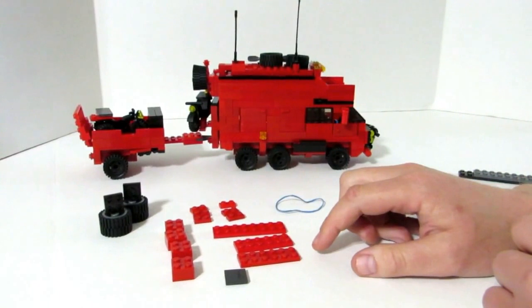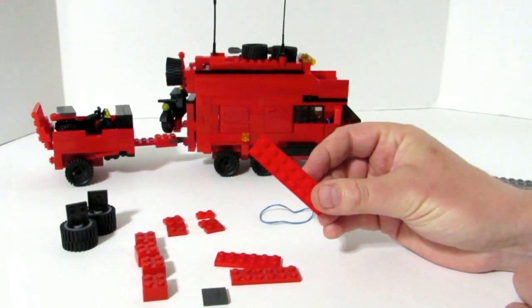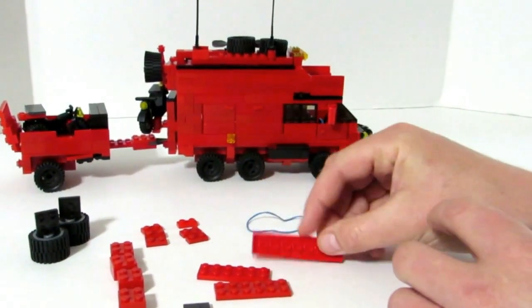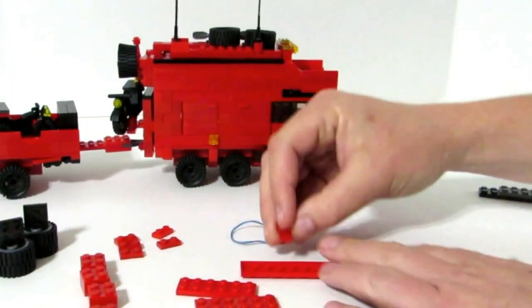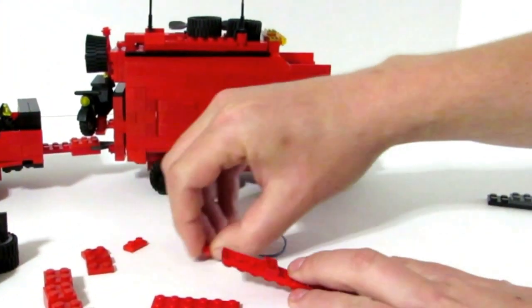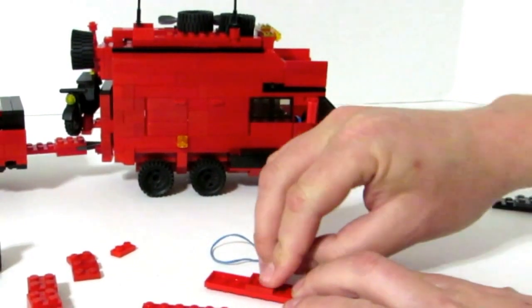The first thing we're going to do is take this piece right here and flip it over. We're going to take these two 1x2 pieces here and just put those in the middle. You can see here there's one and then there's the other one.